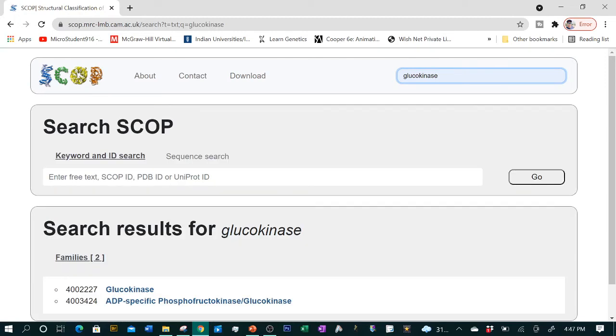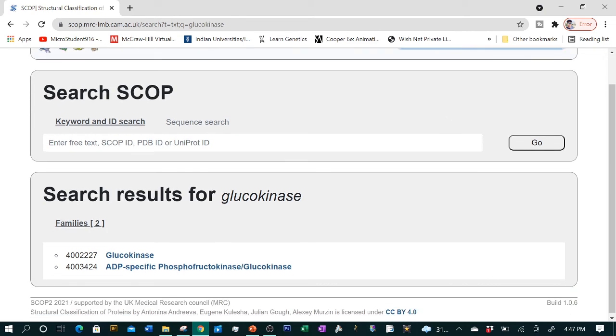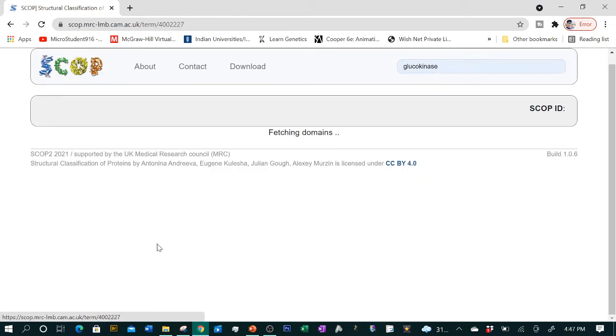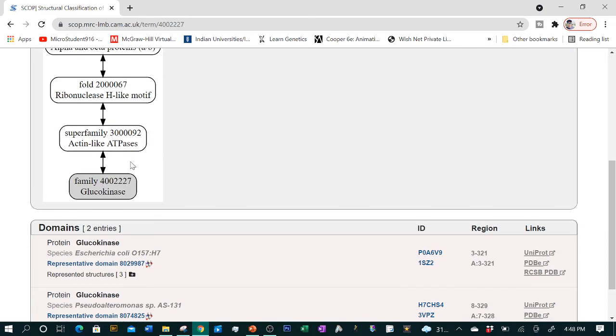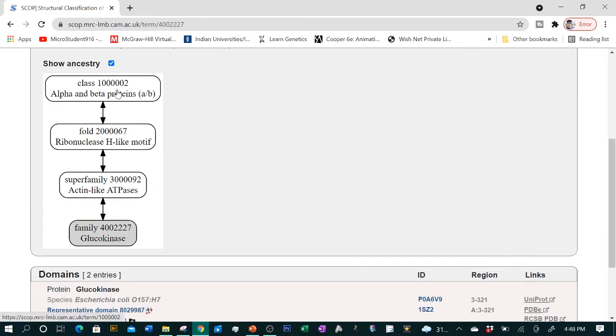This is the search result for glucokinase. If we click on glucokinase, it gives a family. If we click on 'show ancestry,' it tells us the basis of classification. It starts with class—this particular protein, glucokinase, has alpha and beta, so it's alpha or beta. It has ribonuclease H-like motif. Its superfamily is actin-like ATPases, and lastly its family is glucokinase. All these layers of information are found in SCOP database.